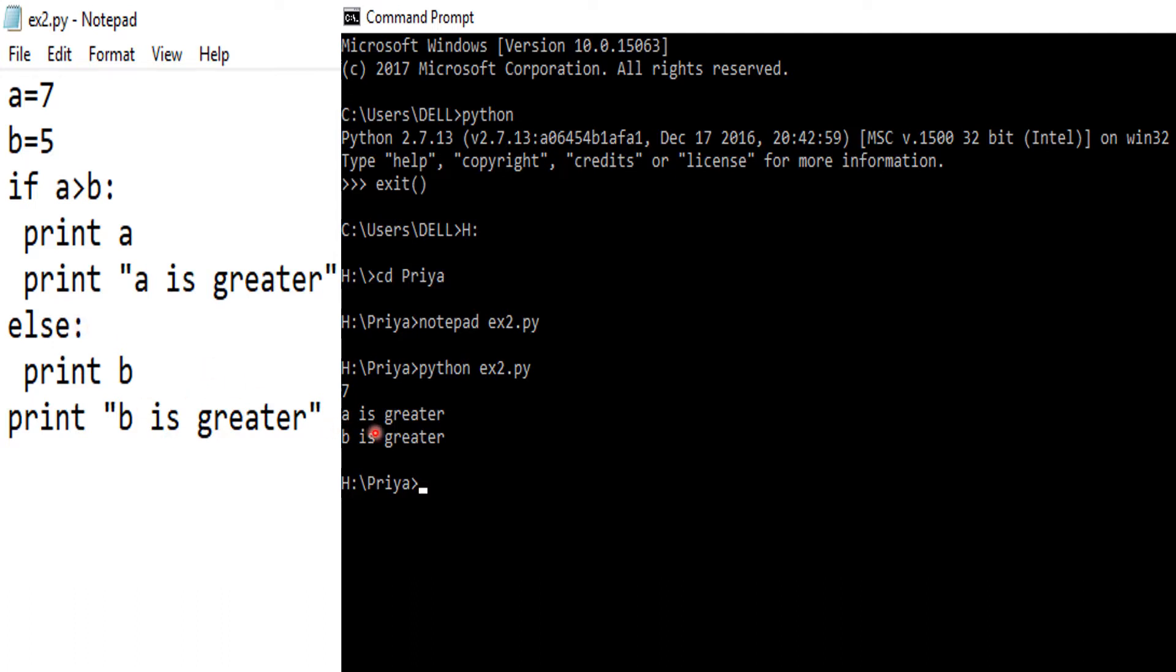Thus, when we run this program, we get seven, a is greater, this output, and then it ignores else, and then it identifies this as out of the else part. So it prints b is greater again.